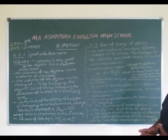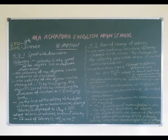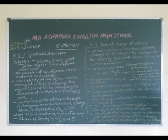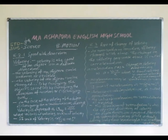The formula for acceleration: a = (v − u) / t, where v is called the final velocity, u is called the initial velocity, and t is called the time interval. Acceleration may be uniform or non-uniform. The SI unit of acceleration is meter per second square, also written as m/s² or m s⁻².